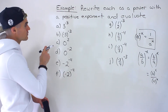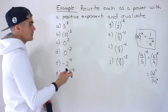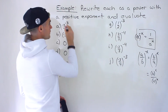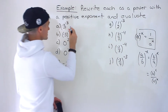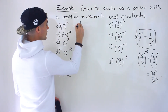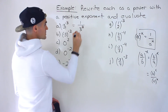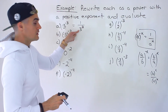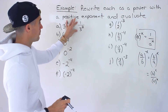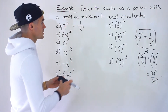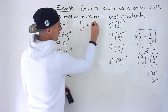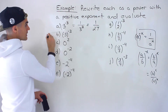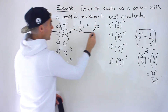Let's start with part a: 3 to the power of negative 3. Using our rule, a is 3 and the negative x is negative 3, so we rewrite this as 1 over 3 to the power of positive 3. That's how we rewrite it with a positive exponent. Evaluating it, 3 to the power of 3 is 27, so the answer for part a is 1 over 27.